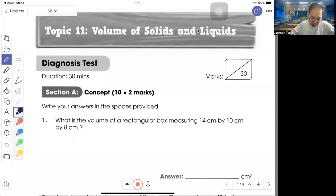Welcome to volume of solid and liquid. We will do some questions. Find the volume, so first problem is done, then that will give you 1120 cm³.